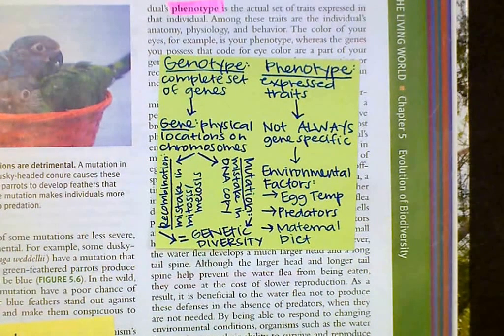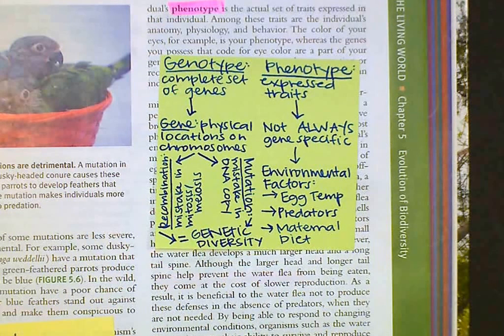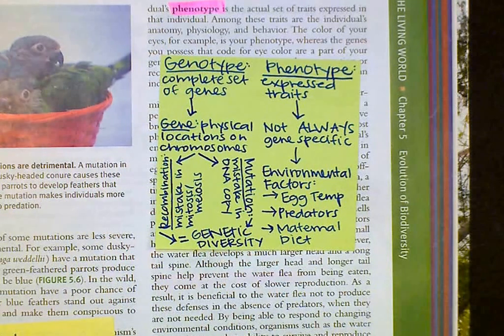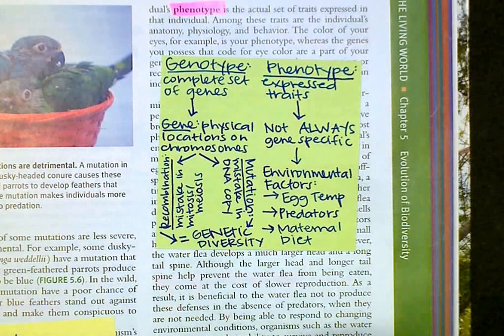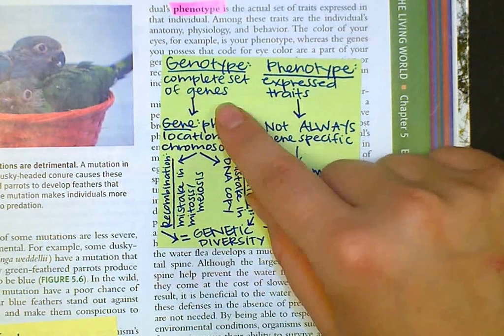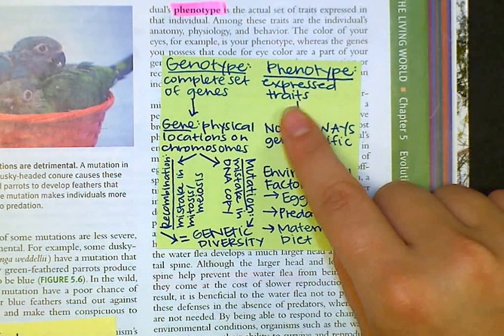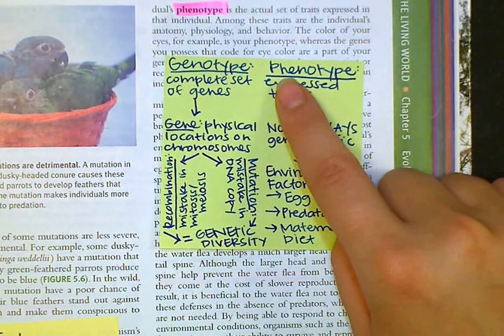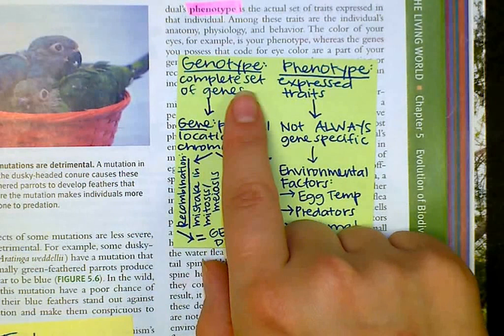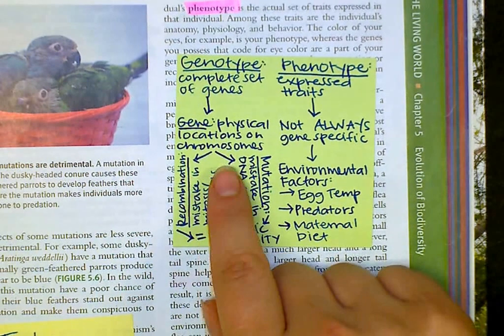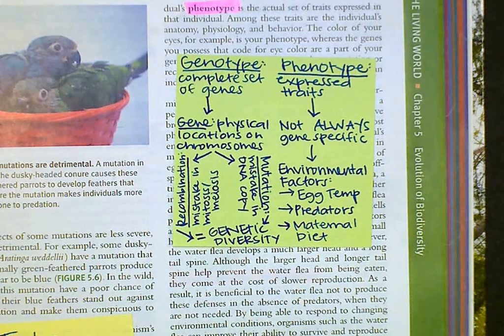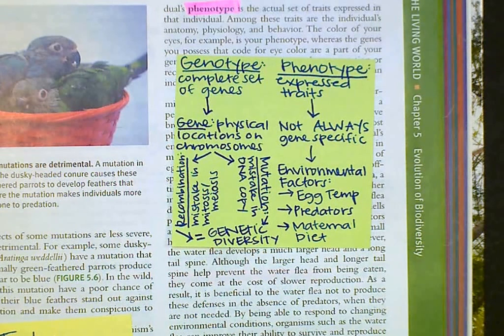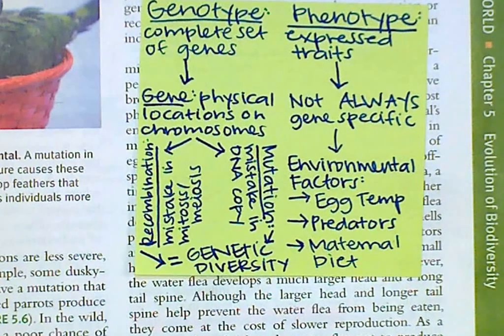Let's turn the page. We have some birds and we're talking about mutations. Our next heading is going to be genotype versus phenotype — these should be familiar to you from biology. Genotype starts with 'geno,' which should make you think of genes. The genotype is the complete set of genes of an organism. A gene is a physical location on a chromosome. We have two ways that genes can be manipulated — let's look at those.